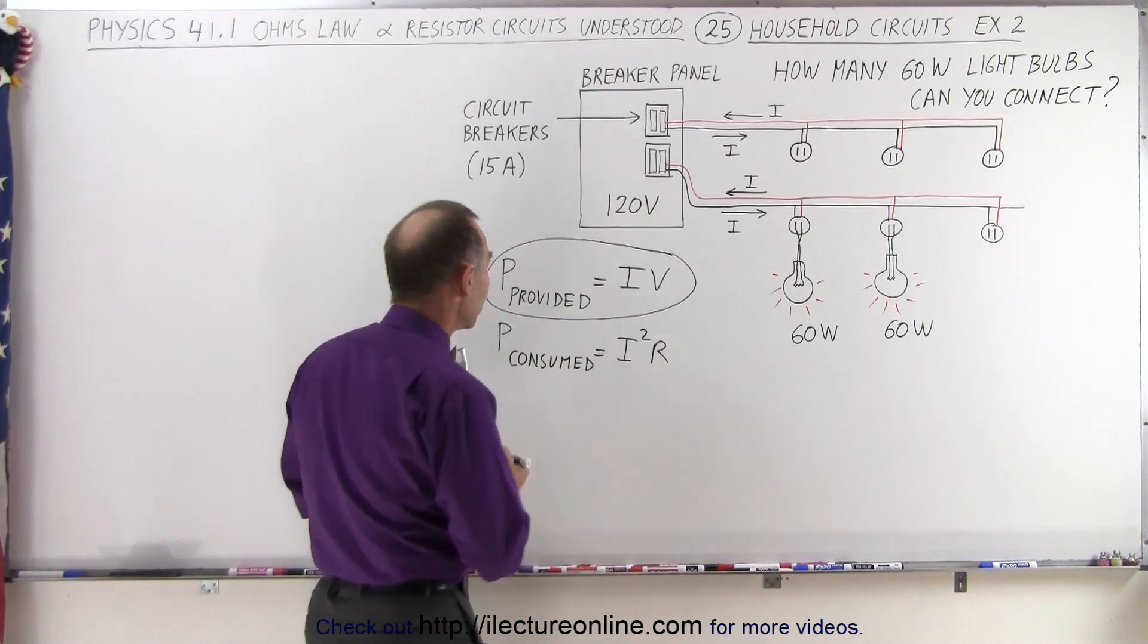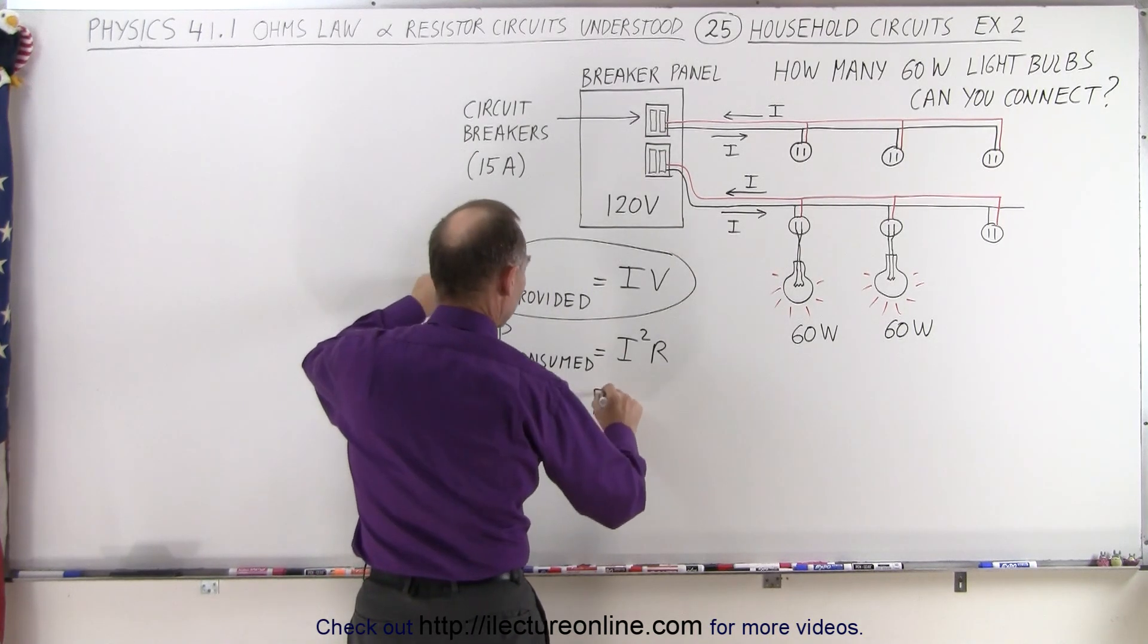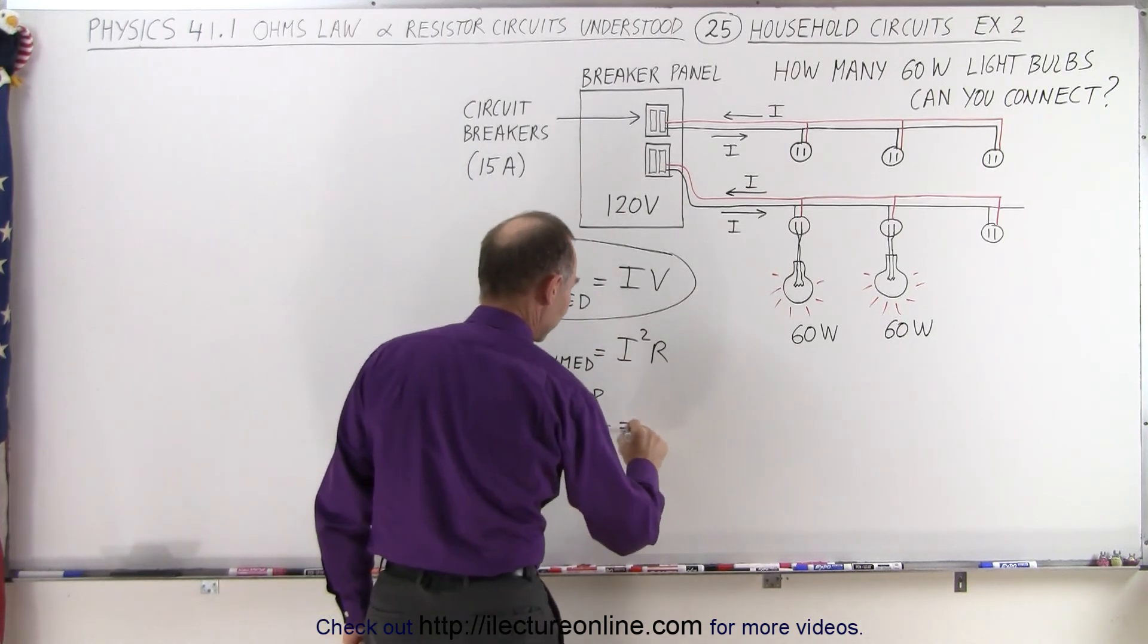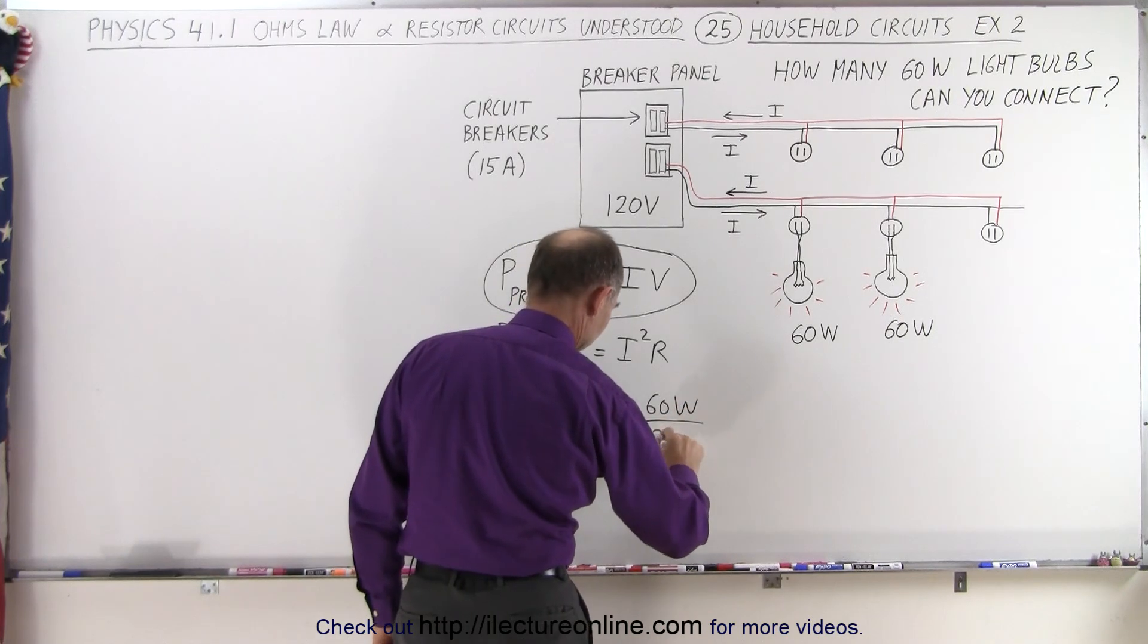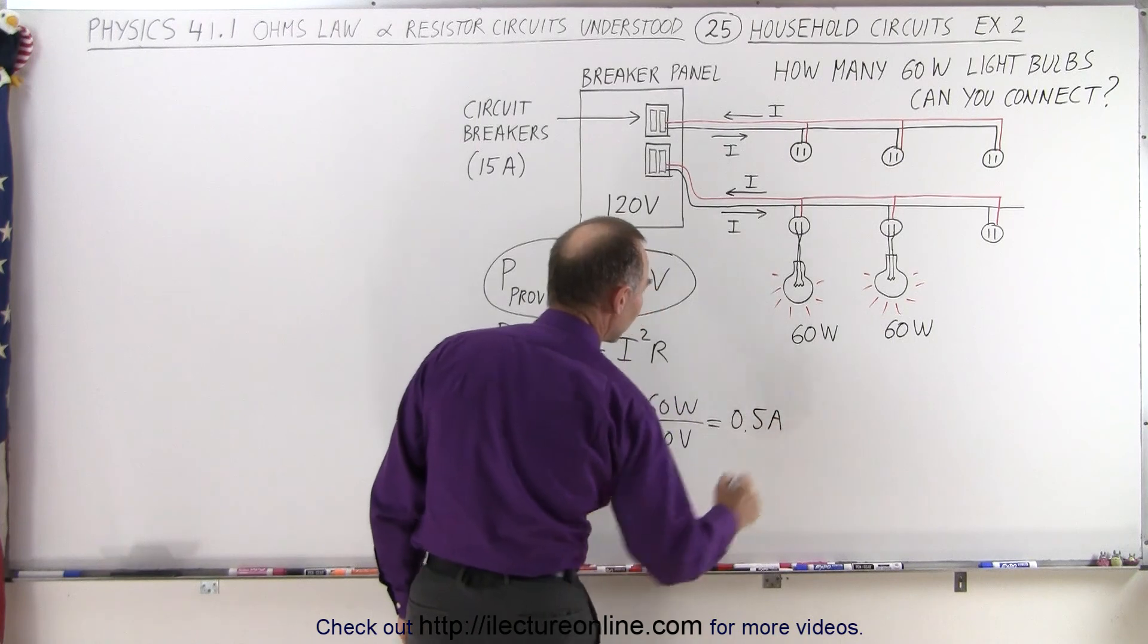So what we can do here is take that equation and solve for the current. I is therefore equal to the power divided by the voltage. So in this case, the power being 60 watts and the voltage being 120 volts, you can see that's a half amp for each of the light bulbs.